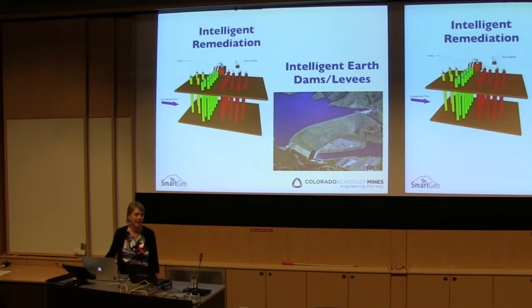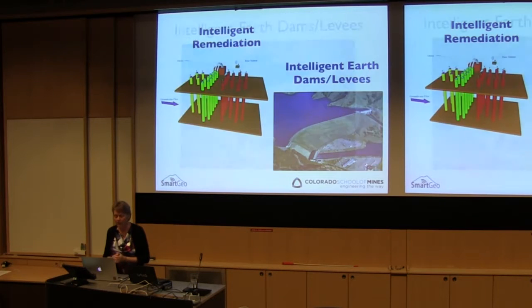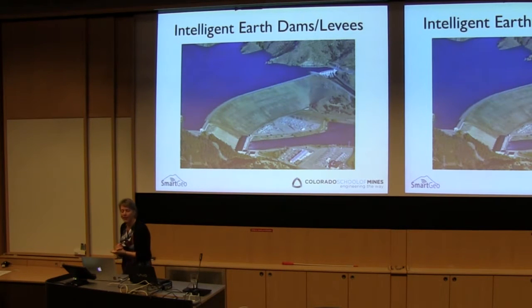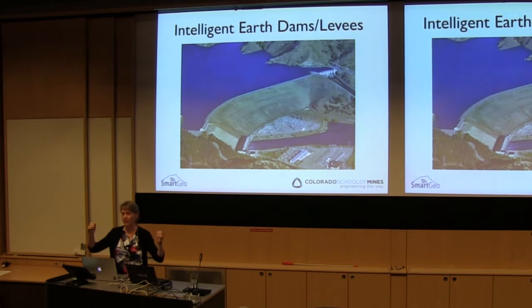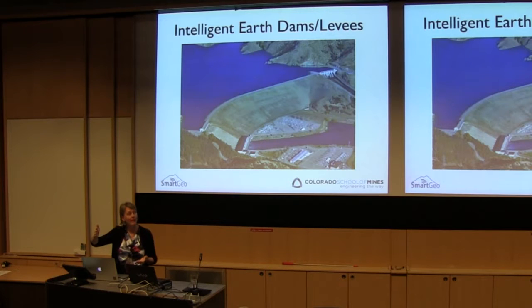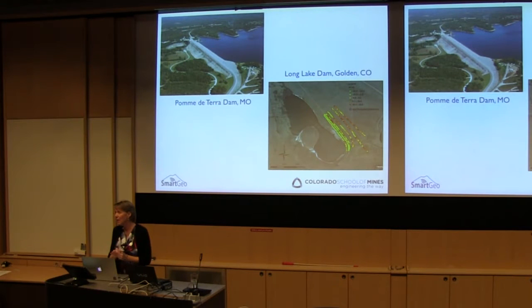Intelligent remediation is another application we work on. I want to spend a few more minutes talking about the intelligent earth dams and levees application. In the United States, we have about 85,000 earth dams and about 200 kilometers of earth levees. Many of these structures are at or near their intended design life — they were built to last about 50 years and the average age is about 46. So we're very close to when these things are meeting the end of their life.